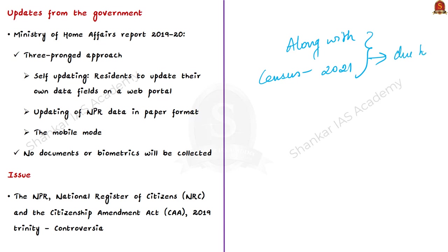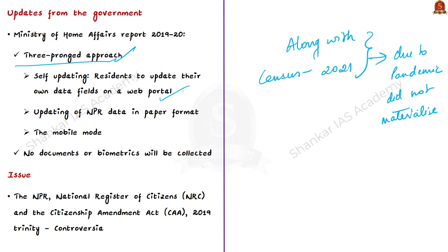According to the Ministry of Home Affairs report for 2019-20, there will be a three-pronged approach for updating the NPR database: first, self-updating, where residents can update their own data fields through a web portal after authentication — which is the news today; second, updating of NPR data in paper format; and third, updating through mobile mode. No documents or biometrics will be collected. A pre-test involving 30 lakh respondents was conducted from August to September 2019 by the Ministry of Home Affairs.